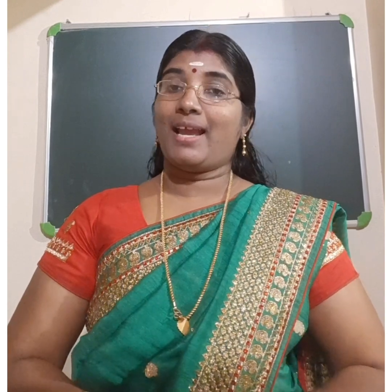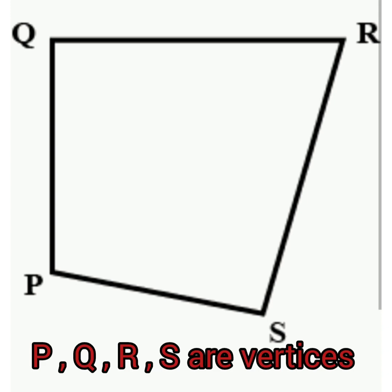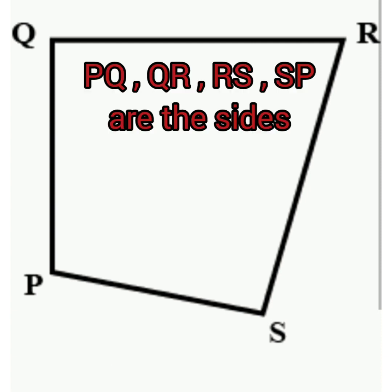Quadrilateral: 'quadri' means four and 'lateral' means side, so a quadrilateral means a four-sided closed figure. Here is an example of a quadrilateral PQRS, where P, Q, R, and S are the vertices, and PQ, QR, RS, and SP are the sides.